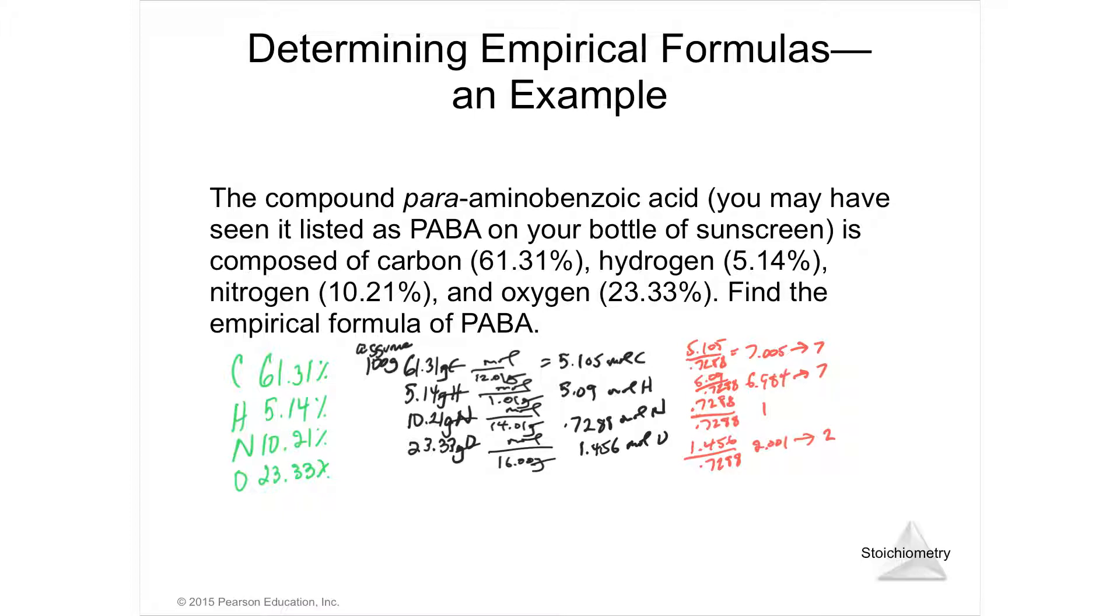I look over here and say, okay, this first one's carbon, hydrogen, nitrogen, oxygen. So this is going to be carbon, that's a 7, hydrogen, that's a 7, nitrogen, that's a 1, oxygen, that's a 2. So this is my empirical formula, C7H7NO2.